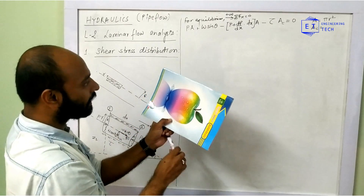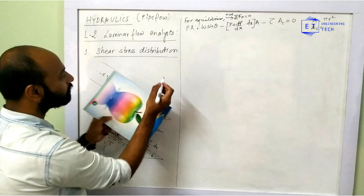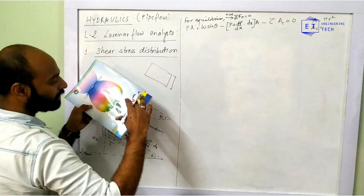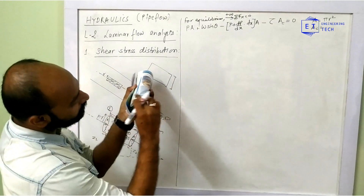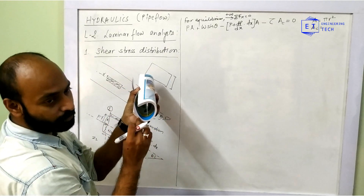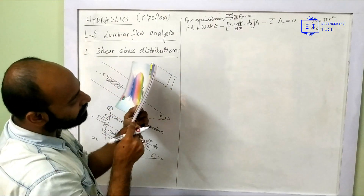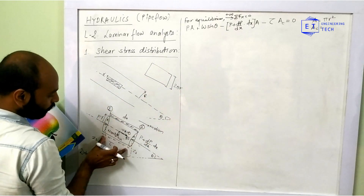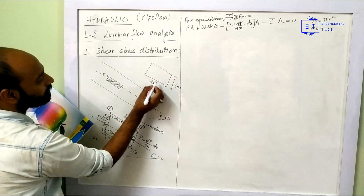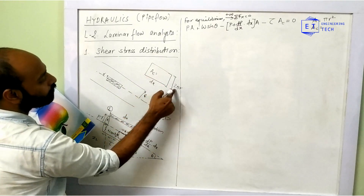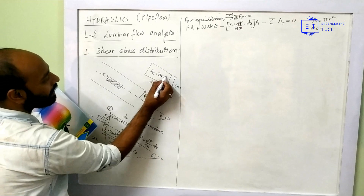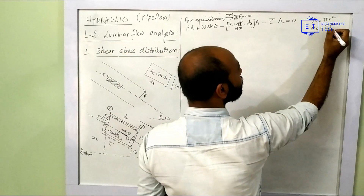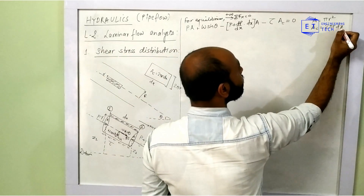The circumference of the circular cross-section is 2 pi r. When we open out the circumferential surface, the length is 2 pi r and the breadth is dx. So the circumferential area AC equals 2 pi r times dx.